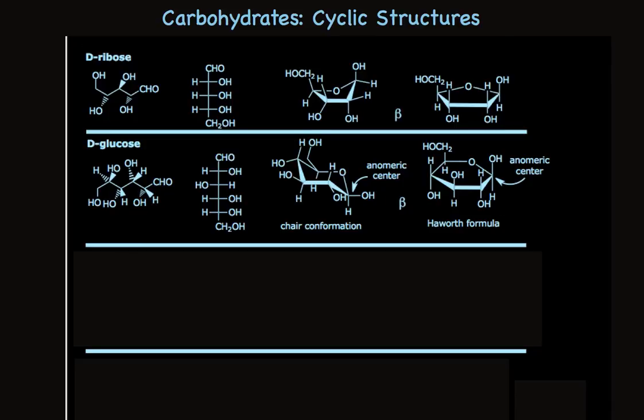Now here's ribose. I've written D-ribose in the acyclic form, both using standard wedges and dashes and using the Fischer projection. You see that the stereochemistry in the Fischer projection is really easy to remember because all the hydroxyl groups are on the same side, and we see that this is D because the hydroxyl group is on the right. Now ribose could form a six-membered ring, but it prefers a five-membered ring, using the carbonyl carbon and three other carbons, plus this hydroxyl group that's next to the bottom.